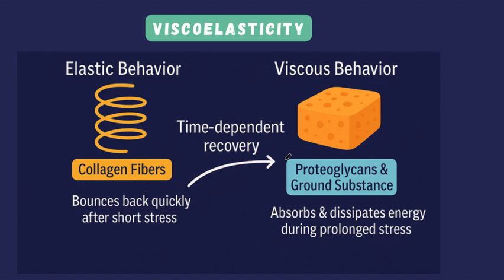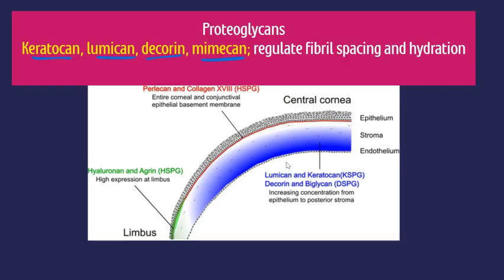Next is the viscoelastic property of the cornea. The cornea isn't just stiff like a spring — it's viscoelastic, combining elasticity — the ability to bounce back — with viscosity — the ability to absorb and dissipate energy. Collagen fibers act like springs that stretch and snap back. But to prevent damage from prolonged, repeated pressure from blinking and intraocular pressure, proteoglycans and ground substances absorb and dissipate energy like a shock absorber. These proteoglycans — keratan sulfate, lumican, decorin, and mimecan — regulate spacing between collagen fibrils, maintain stromal hydration, and impart viscoelastic properties.